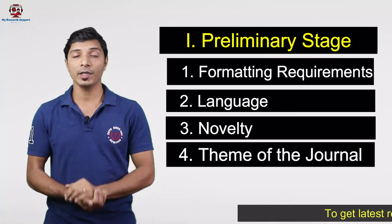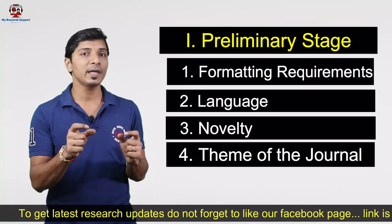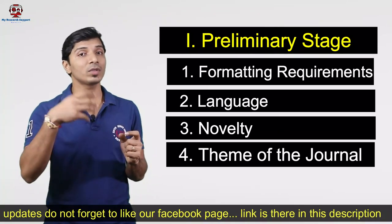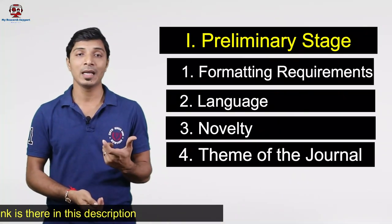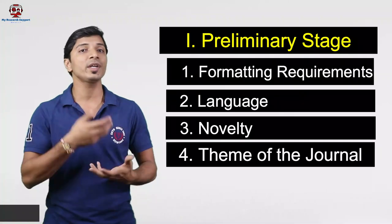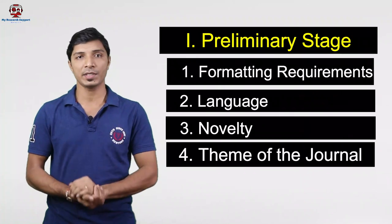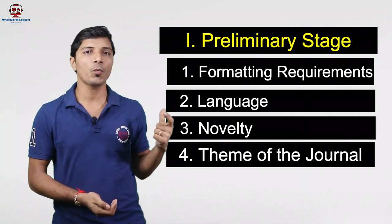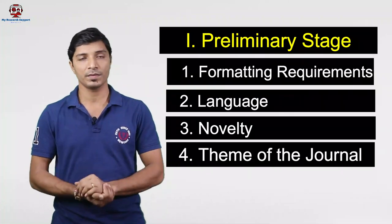Due to the third and fourth points, your manuscript will be directly rejected. If your manuscript does not suit the journal's theme, or if the editorial team feels there is no novelty in your work, it will be directly rejected. But in case of the first two points, some journals might give you a second chance to resubmit with corrections. From now on, we will emphasize on the second point — how to remove grammatical mistakes from your research article or thesis.